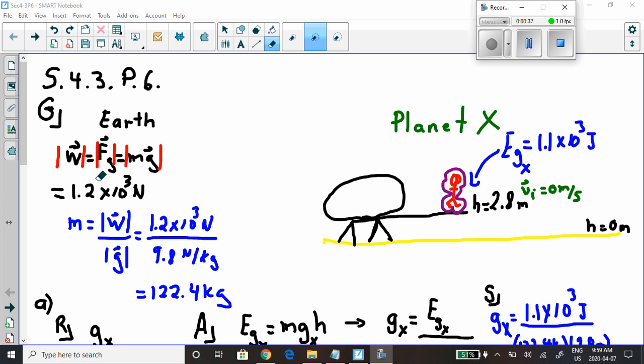Now, they gave us a positive value so what they're really giving us is the absolute magnitude only of the weight. Only the magnitude of the force of gravity. That's why there's no negative sign and that's why I put these red absolute value or magnitude signs there.